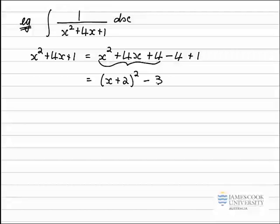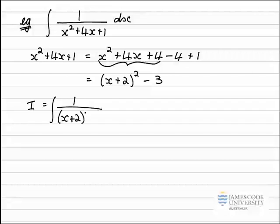So putting that into the integral, which I can now call I, will equal 1 divided by my perfect square, x plus 2 all squared, minus 3. I'm integrating that with respect to x.